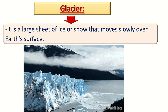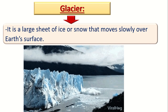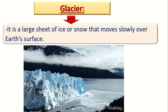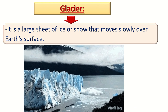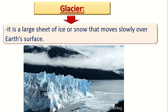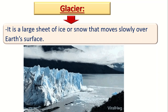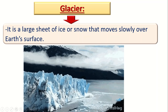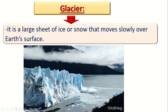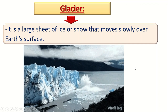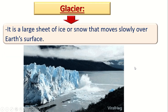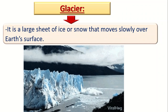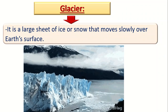From the cryosphere we have glaciers. A glacier is a large sheet of ice or snow which is moving slowly over the Earth's surface, as you can see in this picture. Glaciers are part of the cryosphere.